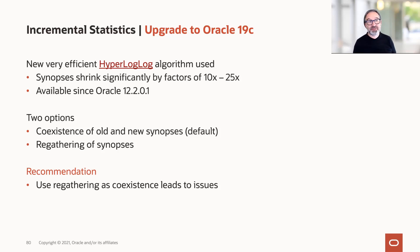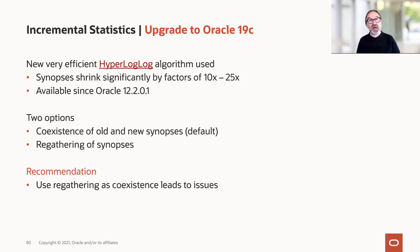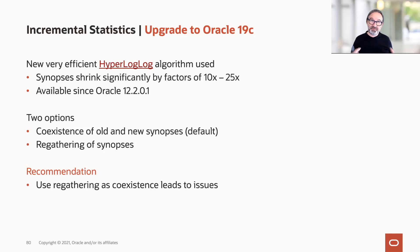This is available since 12.2.1, and there are two behaviors. The first behavior — and this is the default — is the coexistence of old and new synopsis. That means, say you have 10 partitions and you upgrade: the 10 existing ones keep the old synopsis format, while an 11th partition added after upgrade gets synopsis created with the HyperLogLog algorithm. This sounds nice at first, but we are not convinced this is the best idea. The other option is re-gathering the synopsis, which we think is much better.